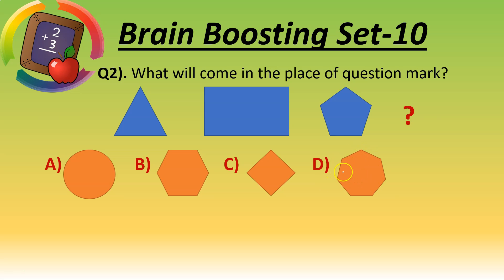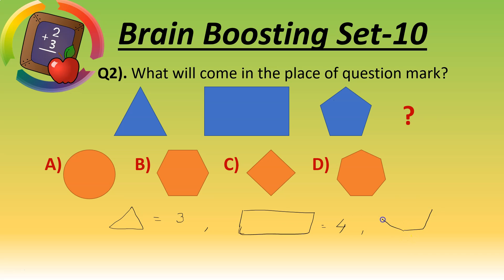In a triangle, how many sides are there? Three. In a rectangle, how many sides? Four — one, two, three, and four. In a pentagon — one, two, three, four, and five — how many sides? Five. So first figure has three sides, second figure four sides, third figure five sides. The next figure should have six sides.